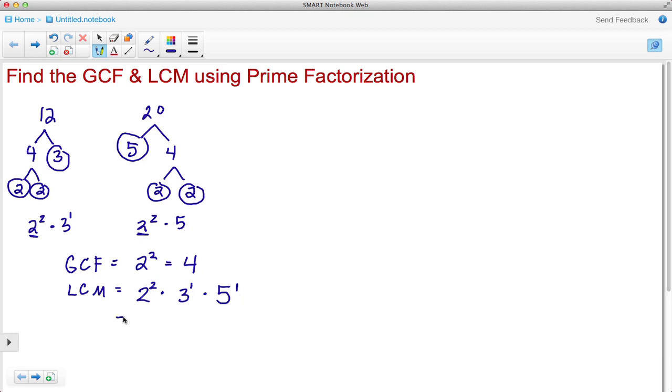As we break this down: 2 to the second is 4 times 3 to the first which is 3 times 5 to the first which is 5. 4 times 3 gives us 12, we rewrite our 5, and then we see 12 times 5 is 60. So our GCF is 4 and our LCM is 60. Let's take a look at one more example.